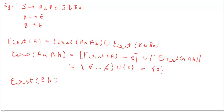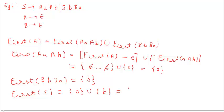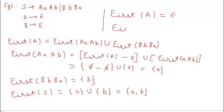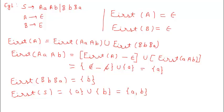Similarly, FIRST of (B b B a) is calculated in the same way and gives us {b}. Now calculating FIRST(S): it comes out to be {a} union {b}, which equals {a, b}. So FIRST(A) = {epsilon, a}, FIRST(B) = {b, epsilon}, and FIRST(S) = {a, b}. After calculating the FIRST set, we need to calculate the FOLLOW set for constructing the LL(1) parsing table.